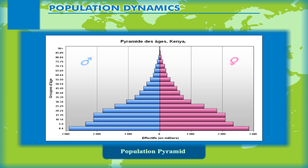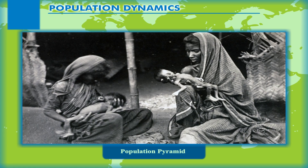The population pyramid of a country in which birth and death rates both are high is broad at the base and rapidly narrows towards the top. This is because although many children are born, a large percentage of them die in their infancy.